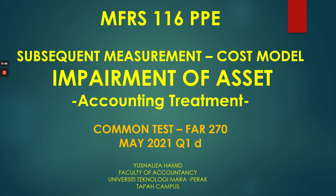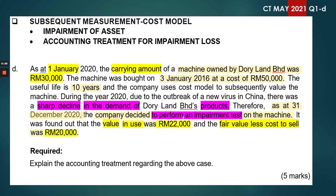Assalamu alaikum and hi everyone. I am Madam Yusner Lisa Hamid. In today's presentation, our focus is on subsequent measurement cost model. Under this subsequent measurement, we are going to discuss the impairment of asset with its relevant accounting treatment. The question I've picked up today is Common Test Question May 2021, Question 1D from FAR 70. So let's look at the question and some of the information that were given.